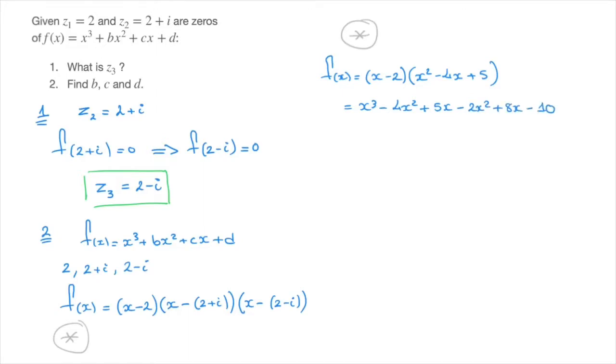All we have to do now is gather like terms and simplify as much as possible. And in doing so, we find that f(x) is equal to x cubed minus 6x squared plus 13x minus 10.